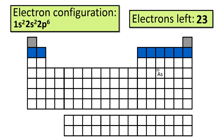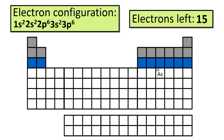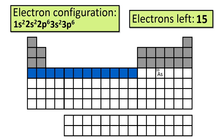The next two electrons go in the 3s orbital, and the following six go in the 3p orbitals, giving us 1s² 2s² 2p⁶ 3s² 3p⁶. The next two electrons go in the 4s orbital, and the following ten electrons go in the 3d orbitals.